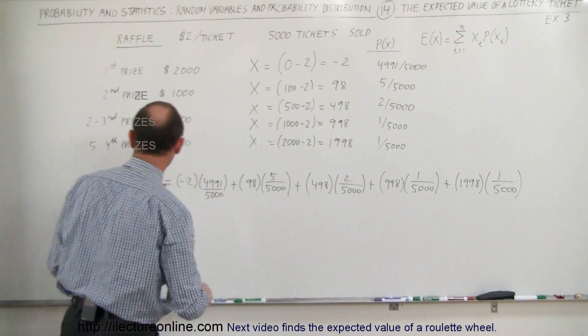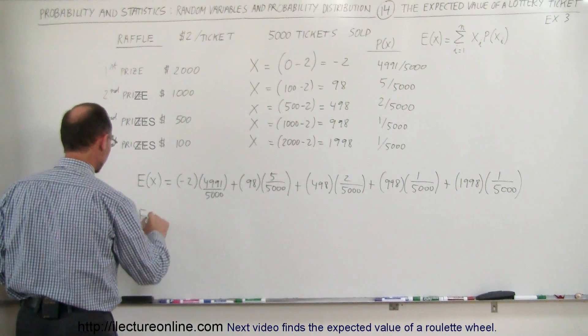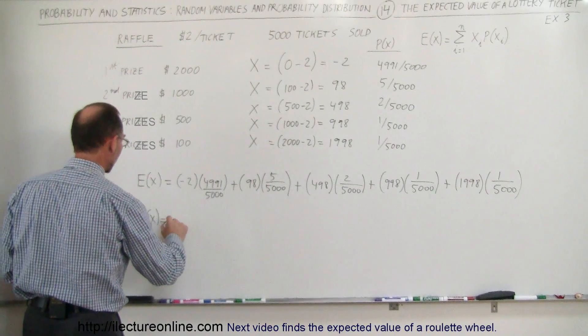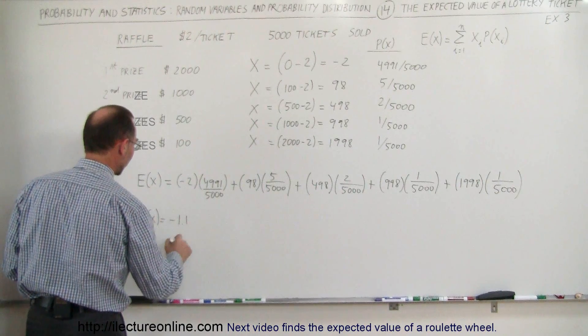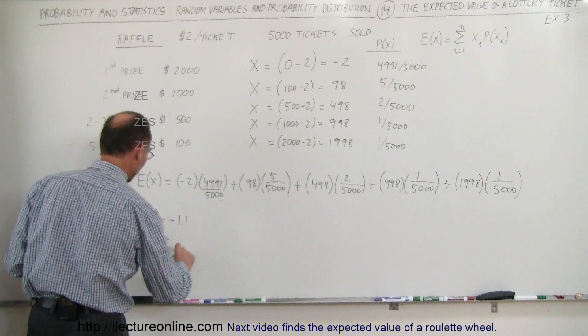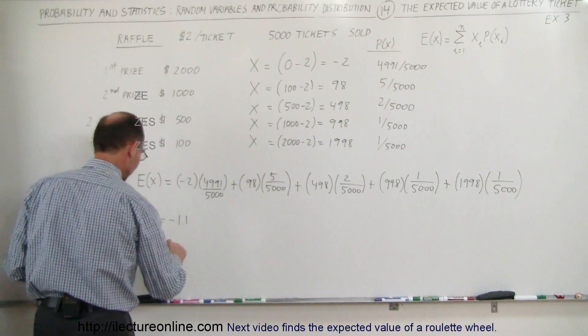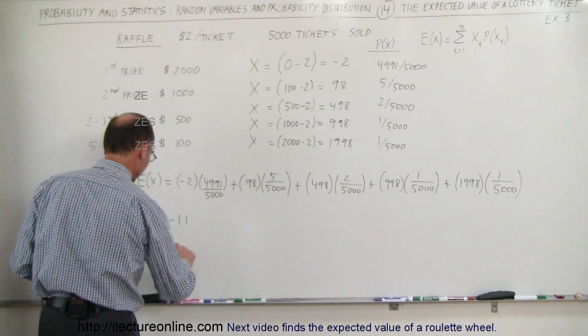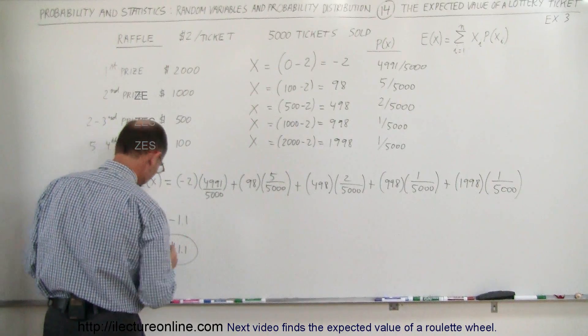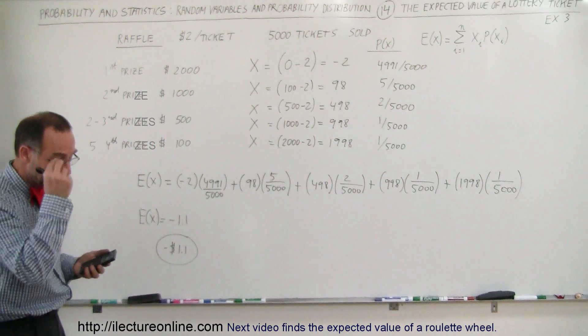And what we get is that the expected value of each ticket is minus $1.10, so minus $1.10. That's the expected value of the ticket.